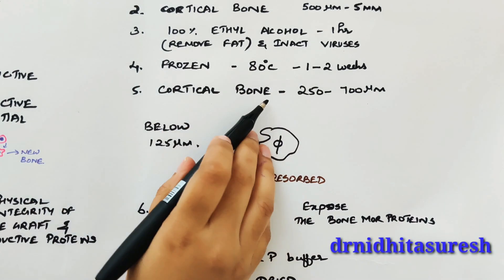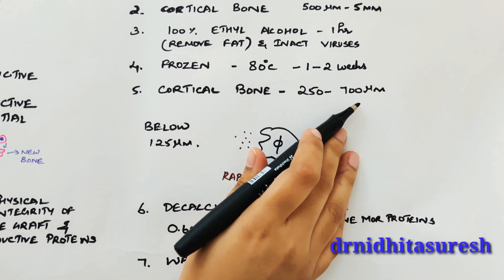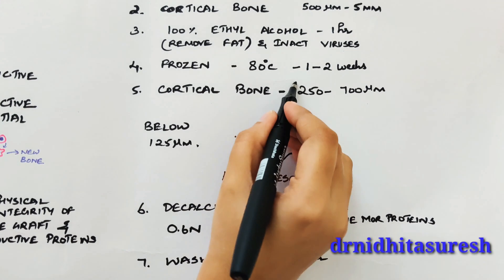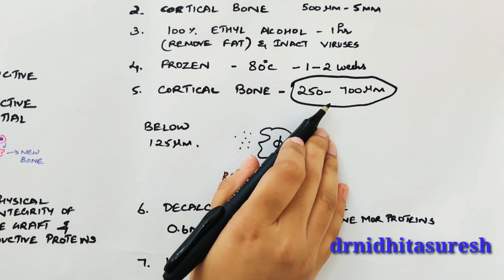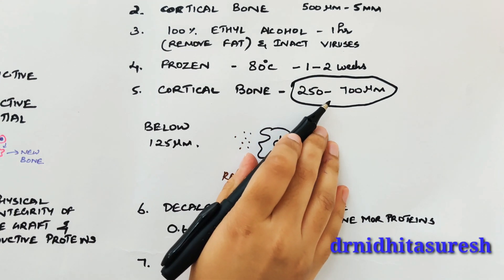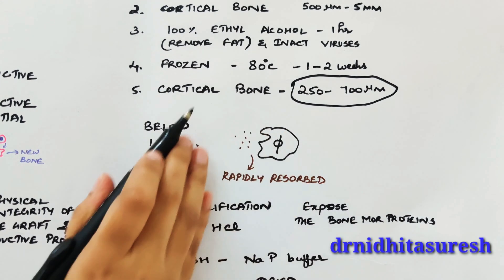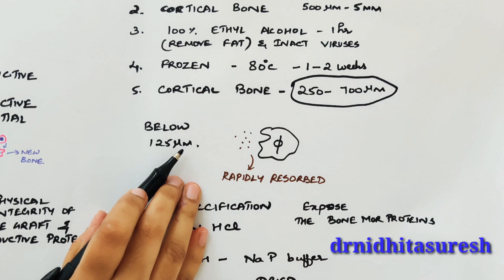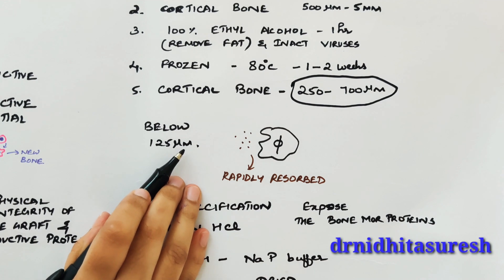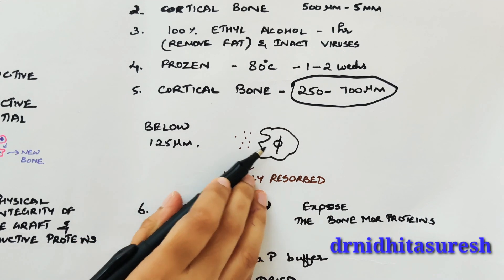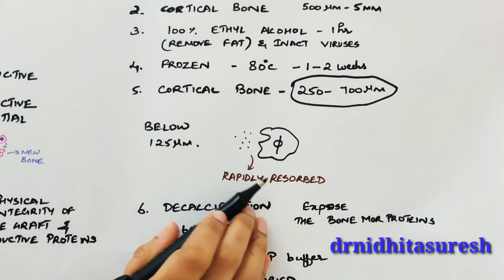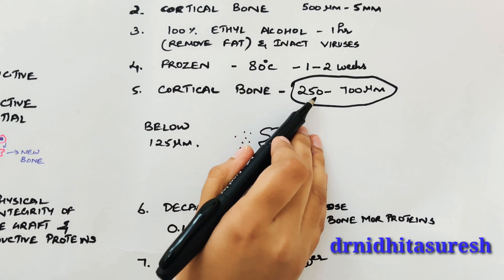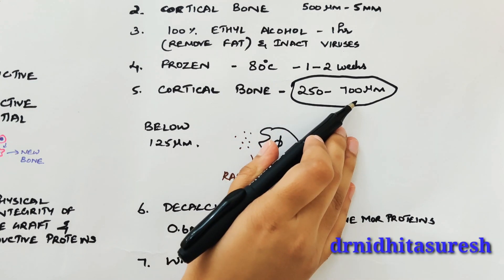The cortical bone is then cut to a final particle size of 250 to 700 µm, which is the ideal size to promote osteogenesis. If the particle size is cut below 125 µm, it would activate a macrophage response and the graft could be rapidly resorbed. This is why a particle size of 250 to 700 µm is necessary.